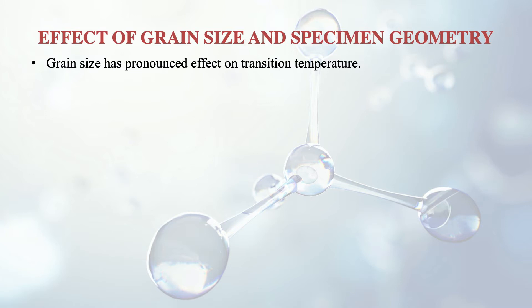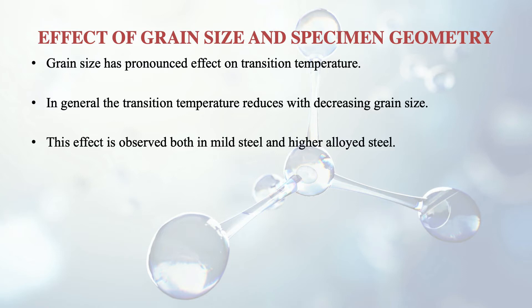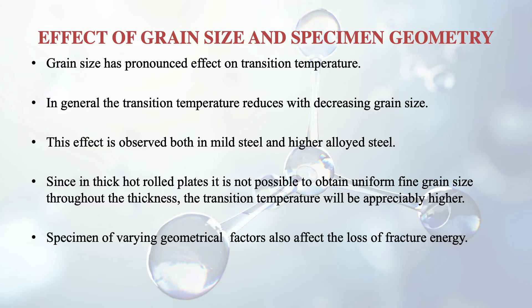Grain size and specimen geometry also affect impact toughness. It is generally seen that the transition temperature reduces with decreasing grain size. This effect is observed in both mild steel and higher alloyed steel. In thick hot-rolled plates, it is not possible to obtain a uniform fine grain size throughout the thickness, so the transition temperature will be appreciably higher. Specimen geometry — varying geometrical factors — also affects the fracture energy.